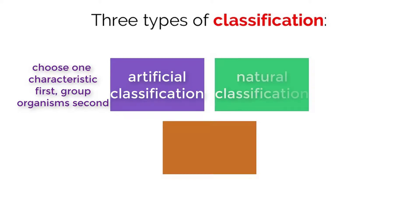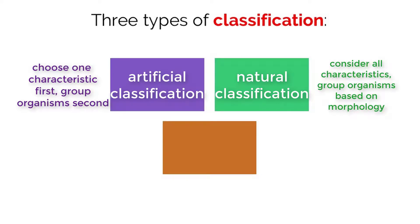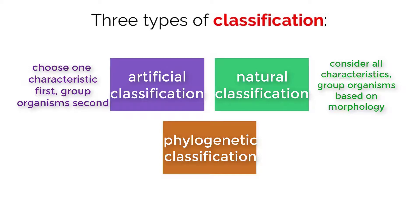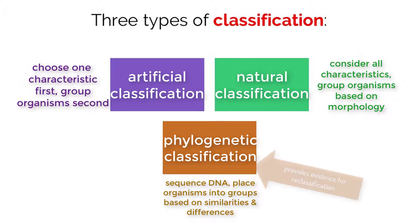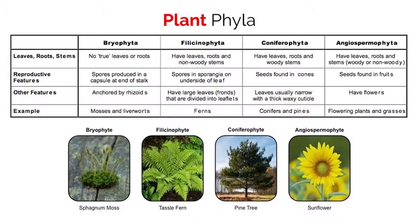Natural classification involves grouping organisms taking into consideration all of their morphology and characteristics, not just one like focusing on a fin. This type of organization can predict evolutionary relationships, but tends to change based on new information. With recent advancements in technology and genetics, scientists have created a newer method called phylogenetic classification. This involves sequencing DNA from organisms and putting them into groups based on genetic differences and similarities. This new method often leads to the reclassification of certain groups because artificial and natural classification do not paint the full, correct picture.